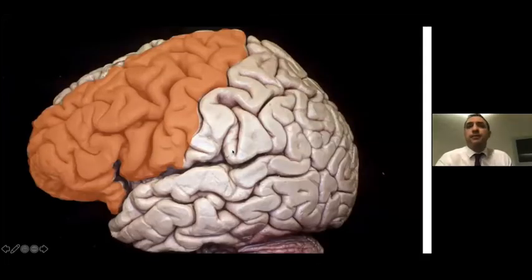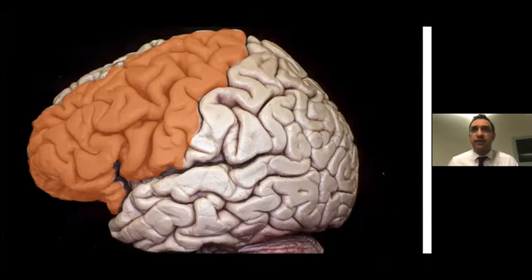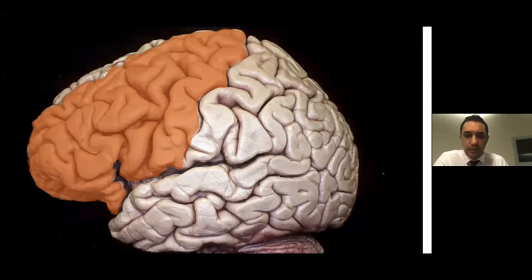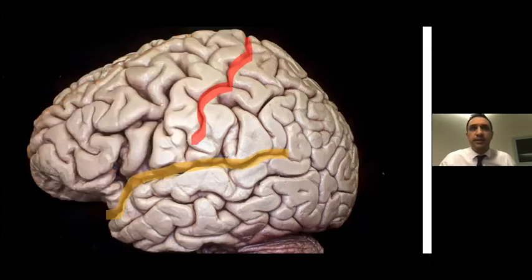Over time, the role attributed to the frontal lobe gradually expanded from pure motor tasks to higher cognitive functions. As mentioned, DTI techniques, neuroanatomical studies, and neurophysiological studies have demonstrated the major role of subcortical connection pathways in these higher cognitive functions. Today in this presentation, we emphasize functional parcellation of the frontal surface and its subcortical connections.